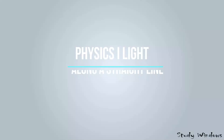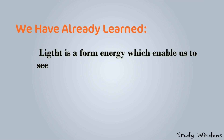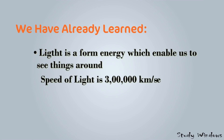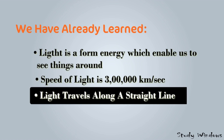Hi everyone, this is Fira and welcome to Study Windows. Today we are going to discuss a very small chapter: light travels along a straight line. We have already learned what is light — light is a form of energy which enables us to see things around, and the speed of light is three lakh kilometers per second. Just as different things have different paths, light also has a specific path.